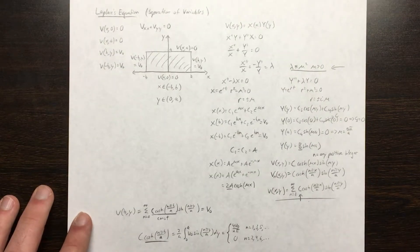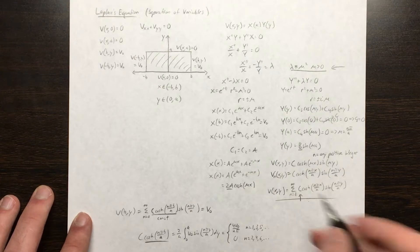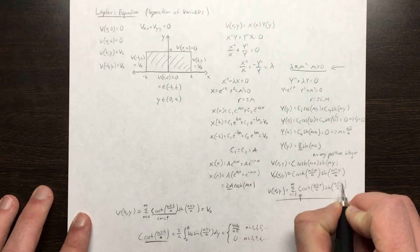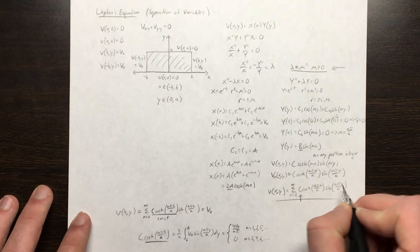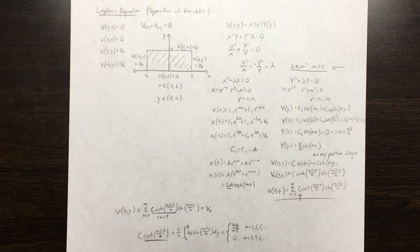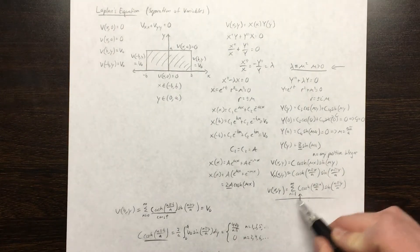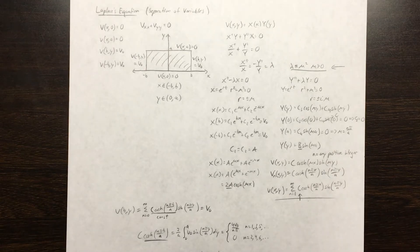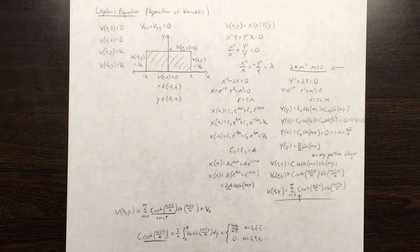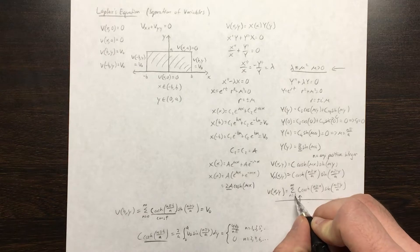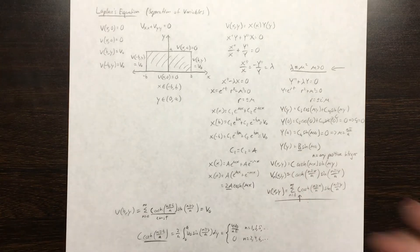The sum starts at n = 1 because if we started at n = 0, we'd have sin(0), making the whole term zero — so starting at 0 would work, but we start at 1 for convenience since n = 0 gives only the trivial contribution.